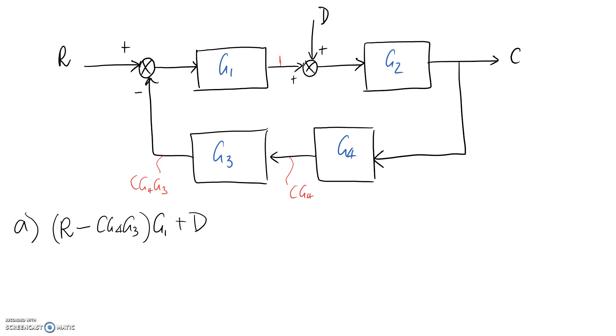This now brings us to this point in the system, this is the signal here. We need to jump across our diagram, so to jump past this block we need to multiply the whole thing by G2, and we've now ended up at the output to our system. This whole thing here has to be equal to the output which is C.